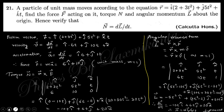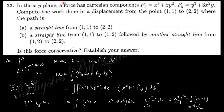Next question: in the xy-plane, the force components Fx and Fy are given. Compute the work done for displacement from (1,1) to (2,2) along two paths: a straight path from (1,1) to (2,2), and a broken path via (1,2) or (2,1). Work done equals the integral of Fx dx + Fy dy. Substituting the given Fx and Fy expressions gives the integrand.